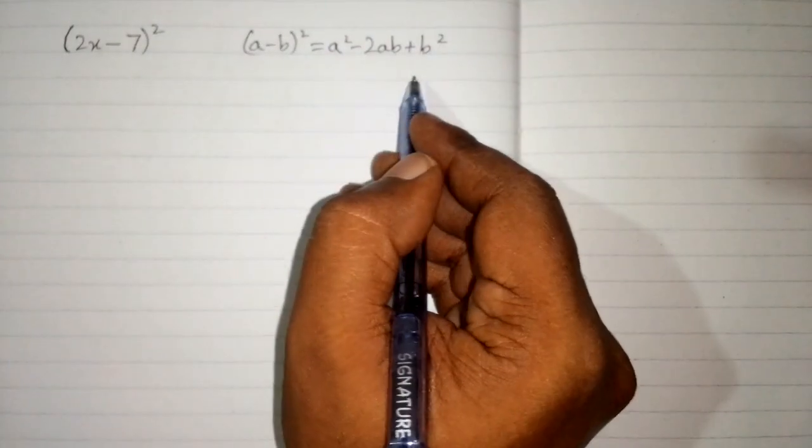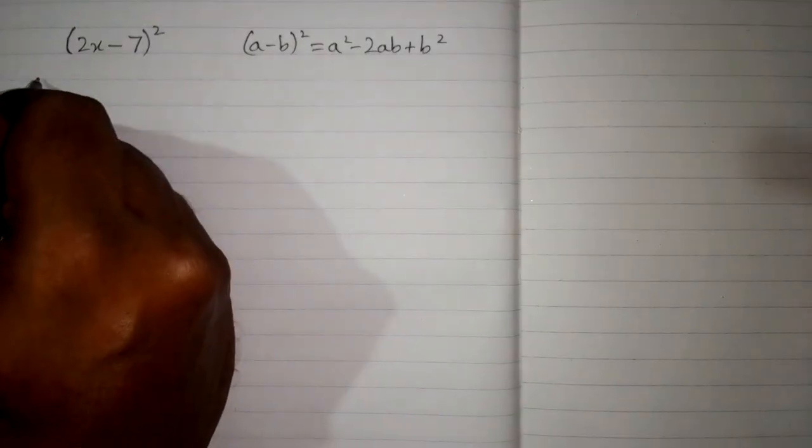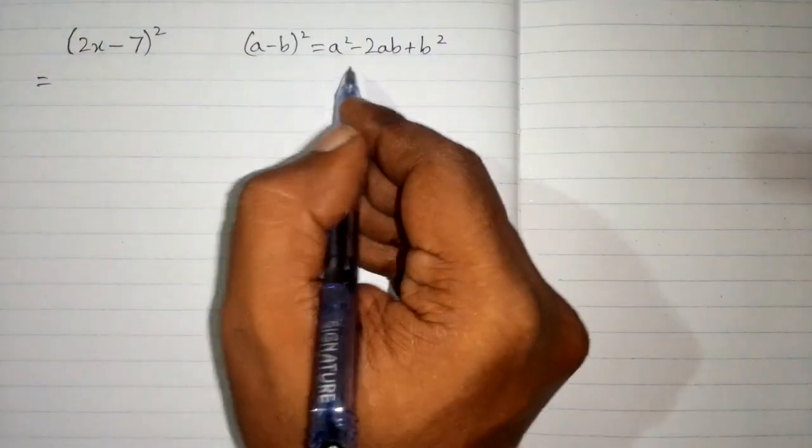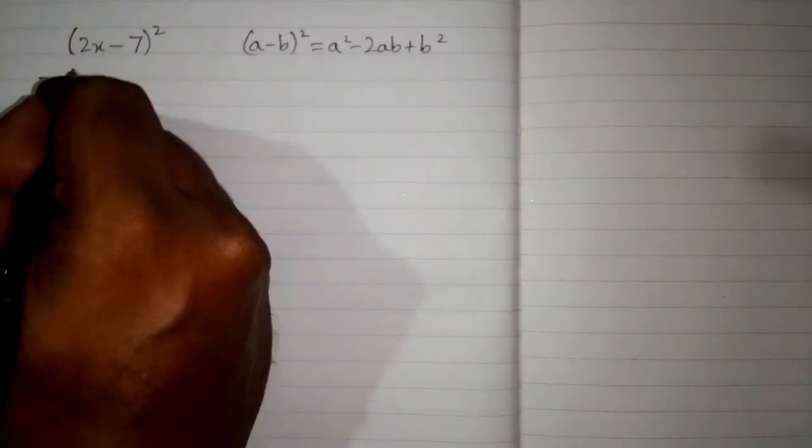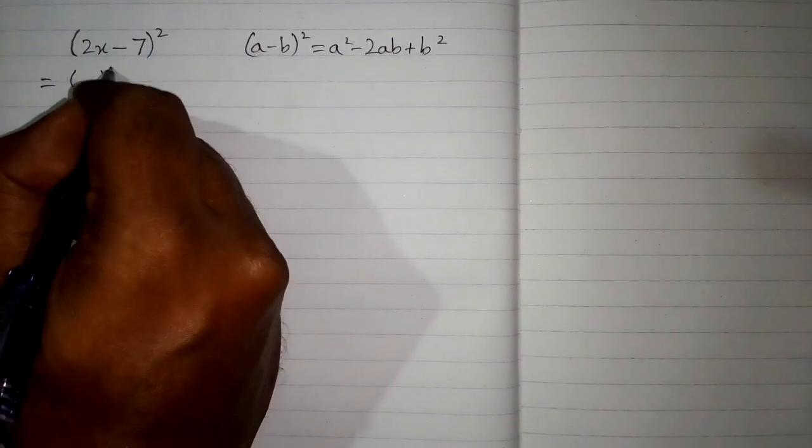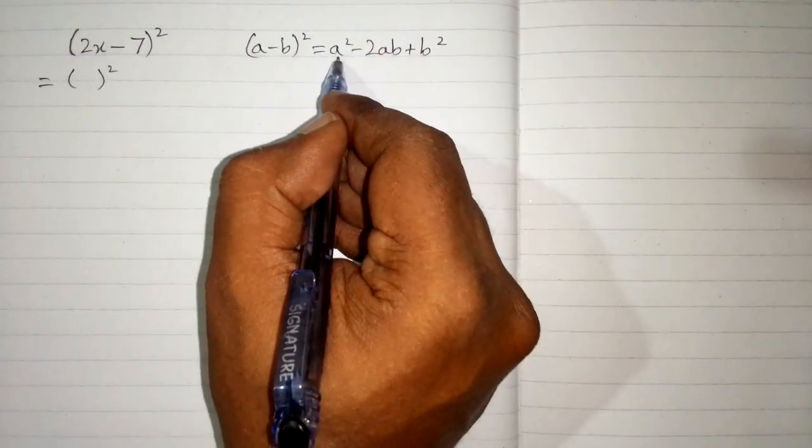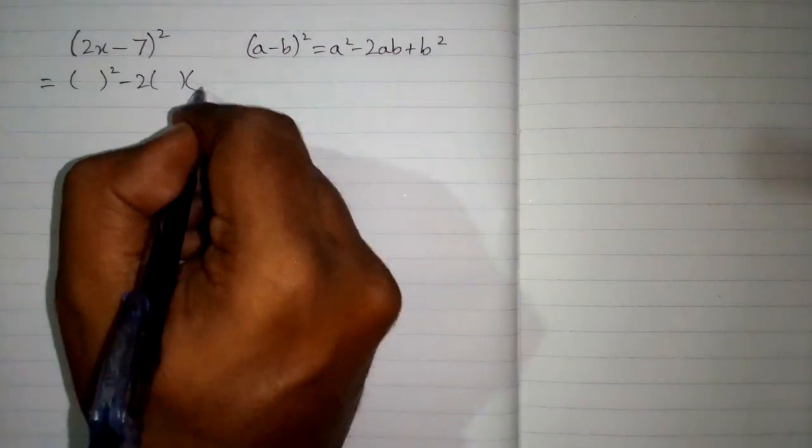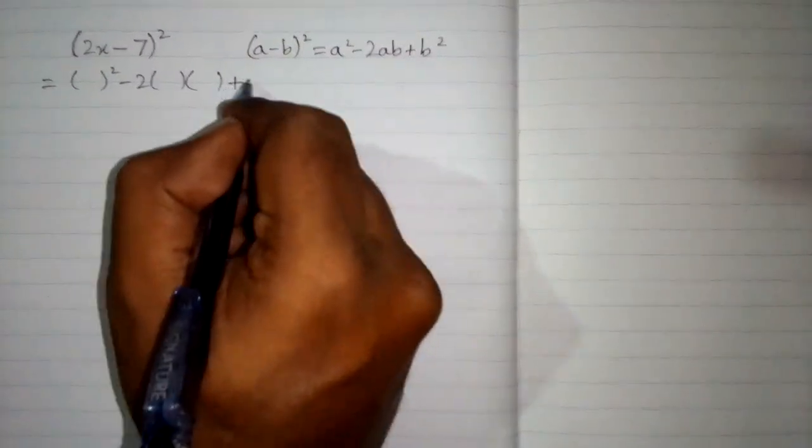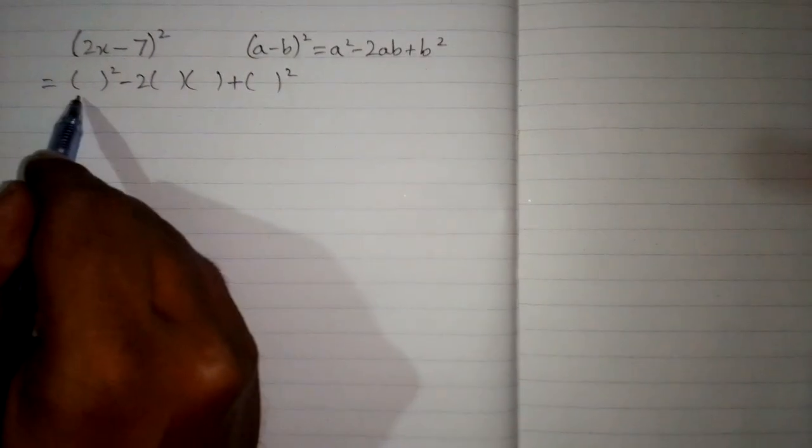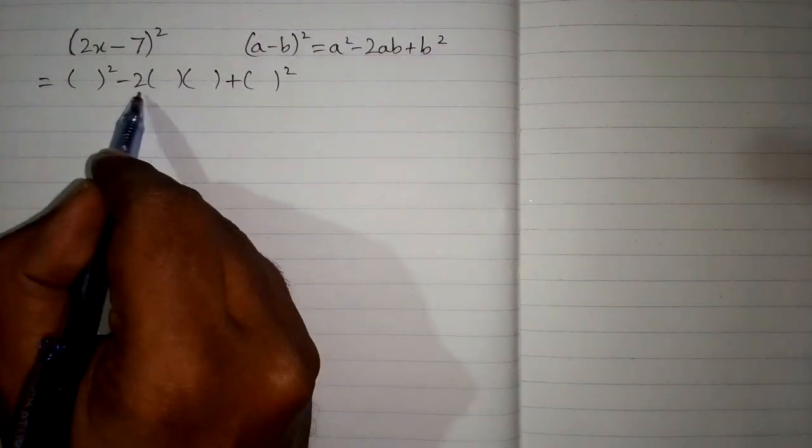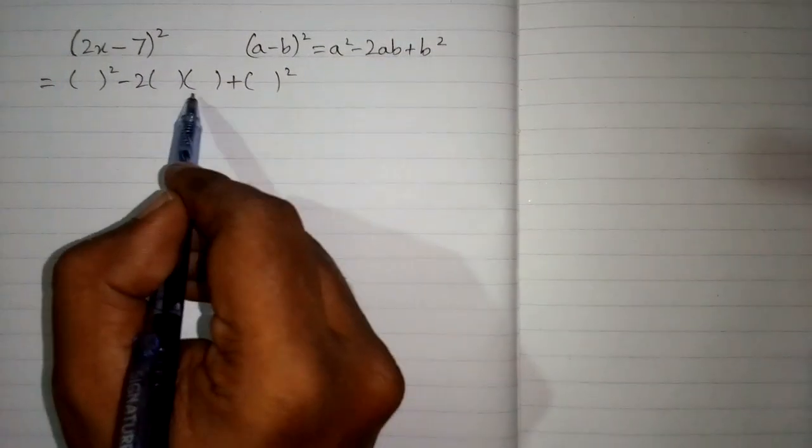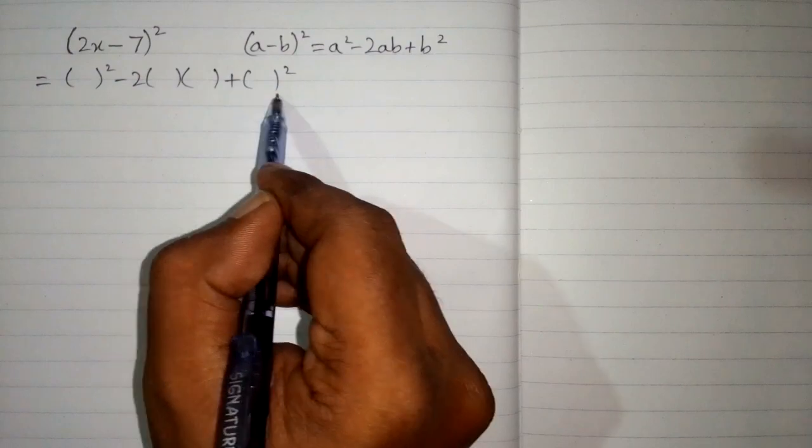This is an algebraic identity and first of all we will write the structure of this formula and we will put bracket in place of a and b. So this is a square minus 2ab plus b square. This thing is a square and this is minus 2ab plus b square.